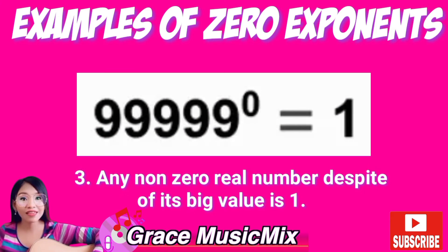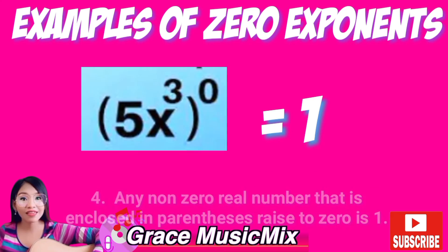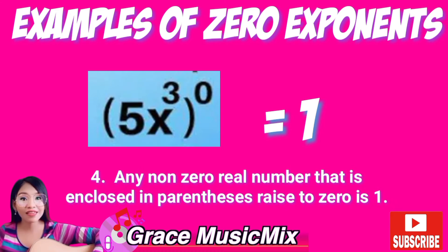Example number 3: any non-zero real number, despite its big value, raised to zero is 1. For example, 99,999 raised to zero is 1. Example number 4: any non-zero real number that is enclosed in parentheses, or a group, raised to zero is 1.